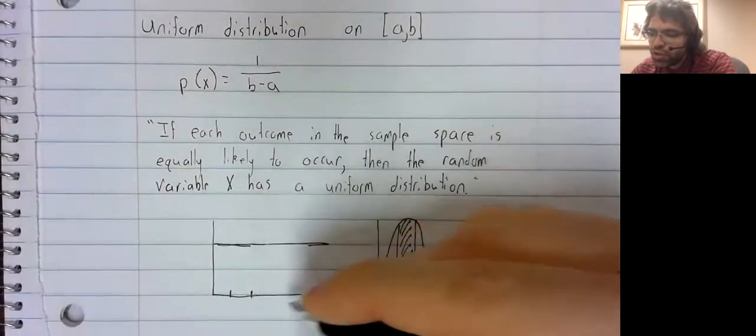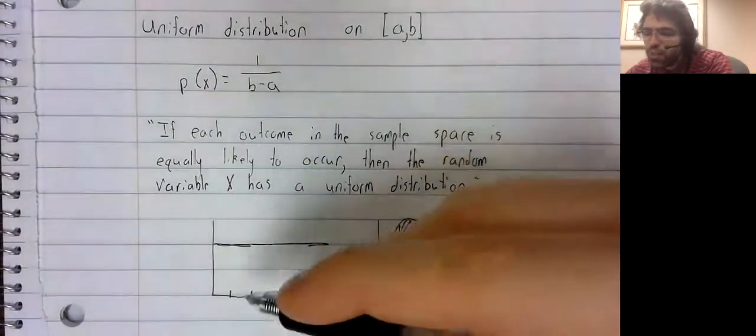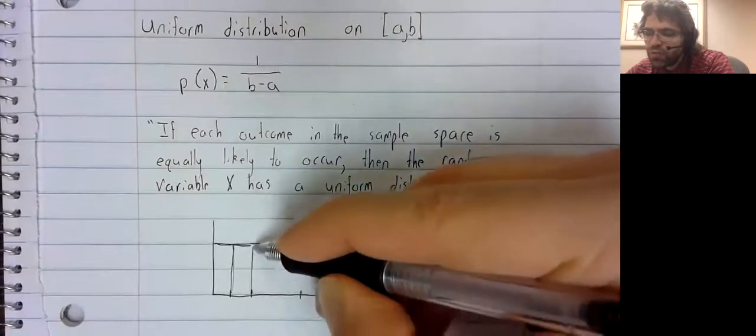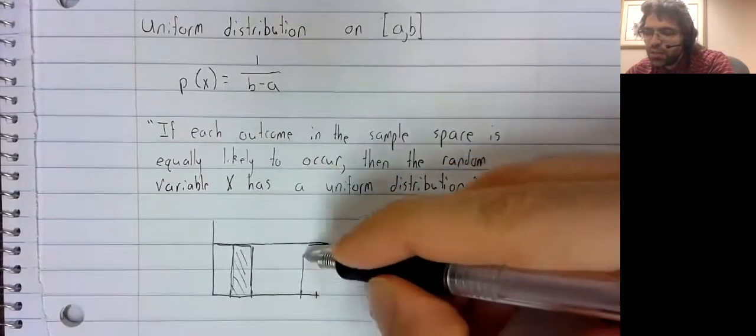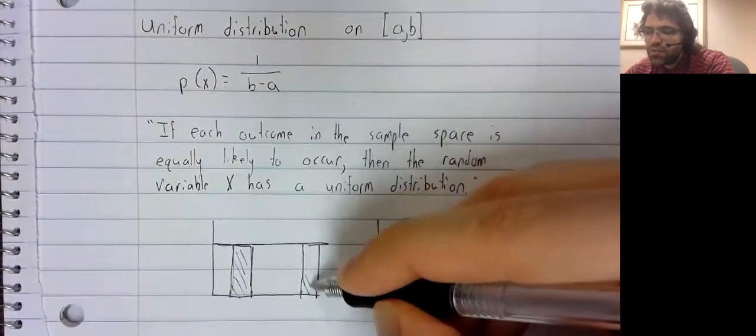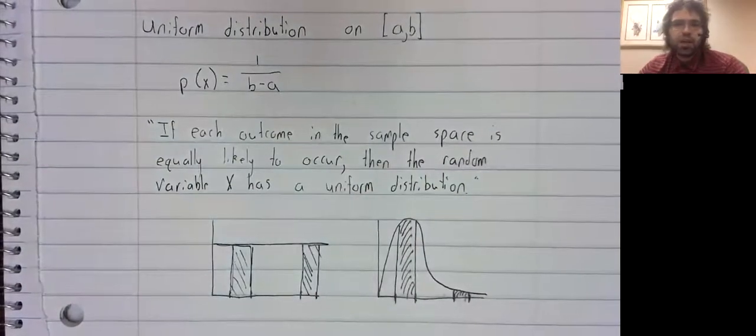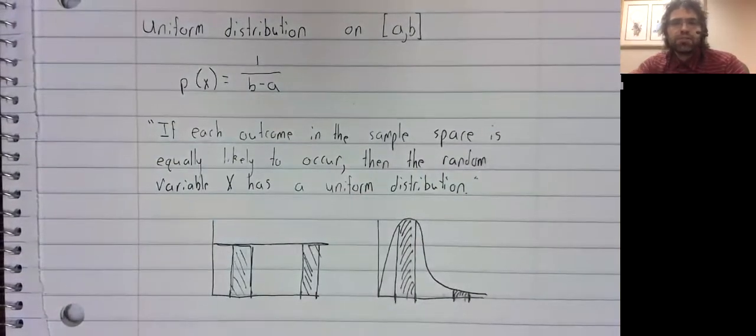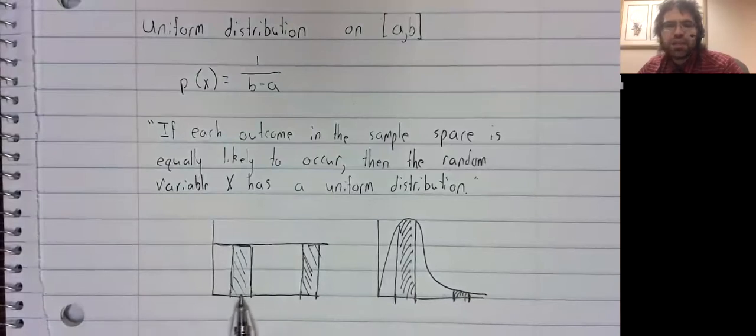By contrast, with the uniform distribution, if you select any two equal sized intervals, this area and this area are the same. So a randomly selected number is just as likely to be here as it is to be here.